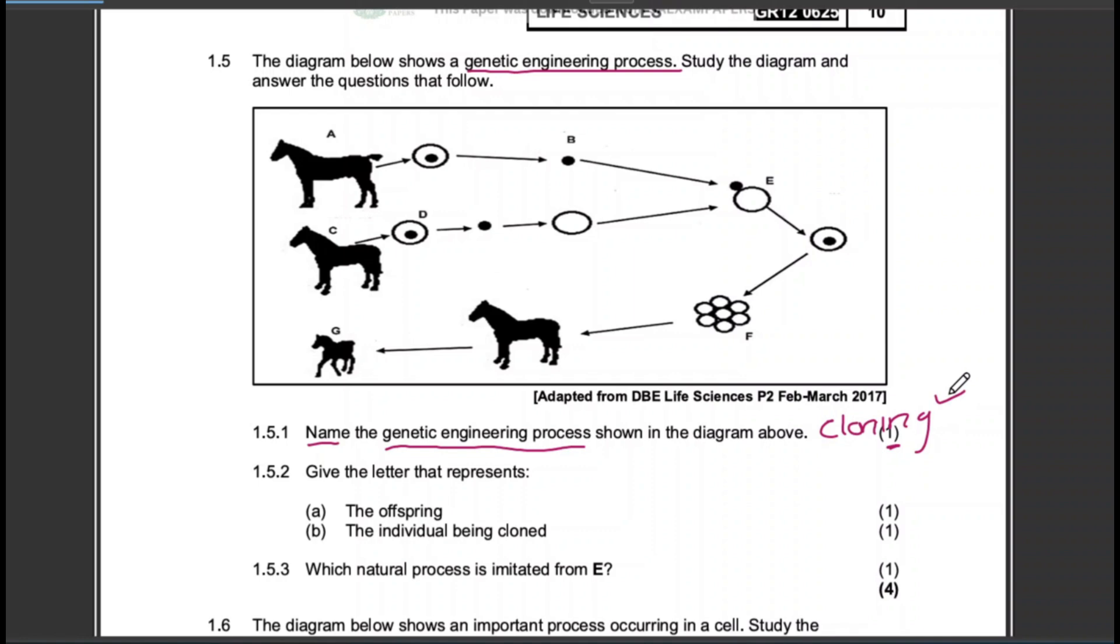Then the second question, give the letter that represents the offspring and also give us the letter that represents the individual that is being cloned. Now this is very easy. These are the letters that we are given: A, B, C, D, E, F, and G. So the offspring will definitely be G.